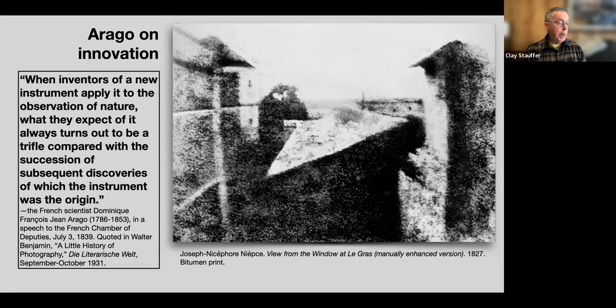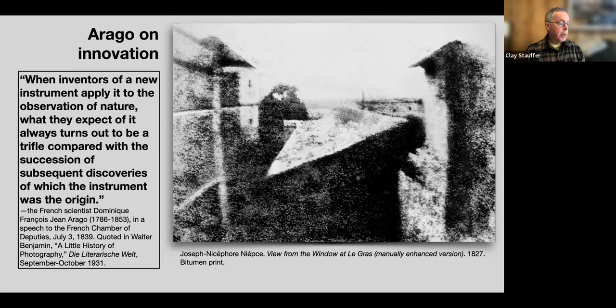Niépce happened to meet a man named Louis-Jacques Mandé Daguerre on a trip to England, and the two decided — in 1829 — to collaborate on photography. Daguerre was a painter in the Romantic style, a stage decorator, and creator of the famous Paris diorama. The two began a partnership. Unfortunately, Niépce died in 1833. Shortly before his death, the two collaborators had used a photosensitive distillate of lavender oil and obtained images in less than eight hours. They were making progress, but it was slow. By 1838, Daguerre decided to continue his investigations on his own.